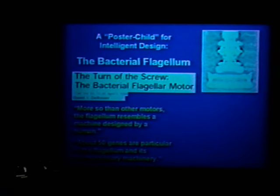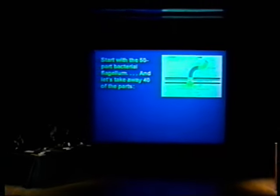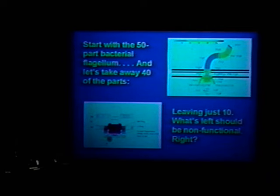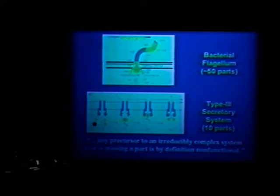My friend David DeRosier has written it almost resembles a machine designed by a human, and about 50 genes are particular to the flagellum and its chemosensory machinery — an extraordinary structure. I agree with you completely, and so do all biologists who have looked at it. However, let's test your idea of irreducible complexity. We start with a 50-part bacterial flagellum, take away 40 of the parts, leaving just 10 — those 10 ought to be non-functional by your definition. But it turns out they are not: those 10 parts form the Type 3 secretory system. Any precursor to an IC system missing a part is by definition non-functional — yet here it is. Doesn't that mean irreducible complexity is wrong?